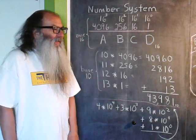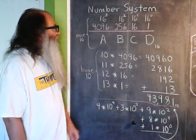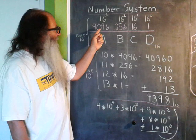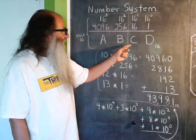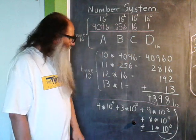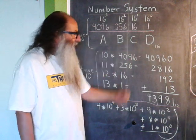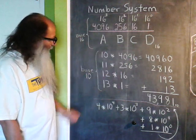So, the base 16 number ABCD consists of 10 units of 4096, 11 units of 256, 12 units of 16, and 13 units of 1. And so, if we go ahead to convert the hexadecimal number into its decimal equivalent, it kind of looks like this.